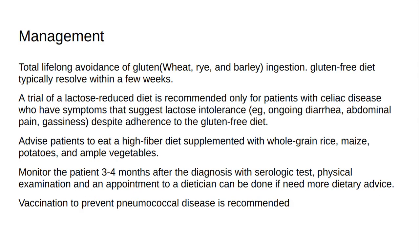When managing celiac disease, total lifelong avoidance of gluten — wheat, rye, and barley ingestion — is the mainstay method. A gluten-free diet typically resolves symptoms within a few weeks. There is a risk of cross-contamination with oats. A trial of a lactose-reduced diet is recommended only for patients who have symptoms suggesting lactose intolerance, such as ongoing diarrhea, abdominal pain, or gassiness, despite adherence to the gluten-free diet. Patients should be advised to eat a high-fiber diet supplemented with whole-grain rice, maize, potatoes, and ample vegetables. Monitor the patient 3 to 4 months after diagnosis with serologic tests, physical examination, and a dietician appointment if more dietary advice is needed.